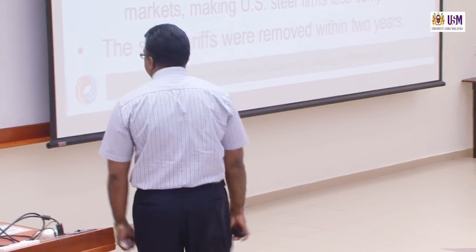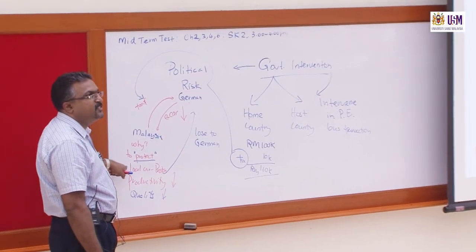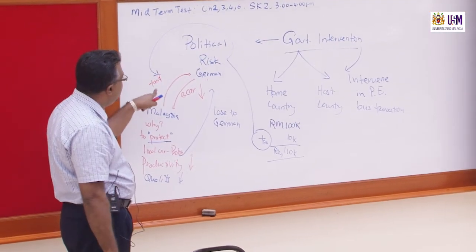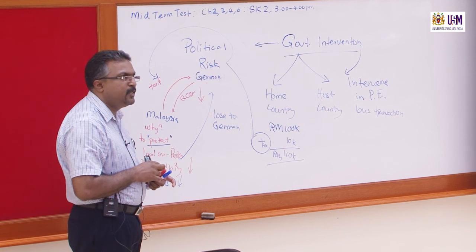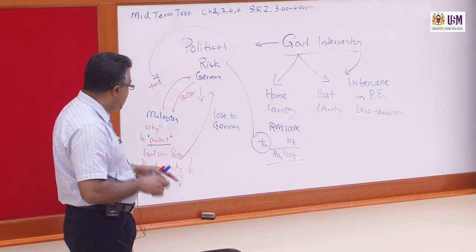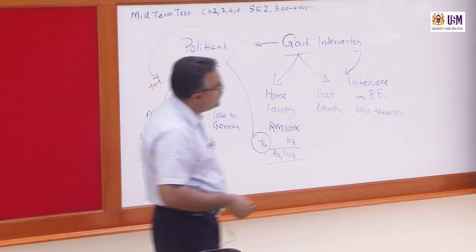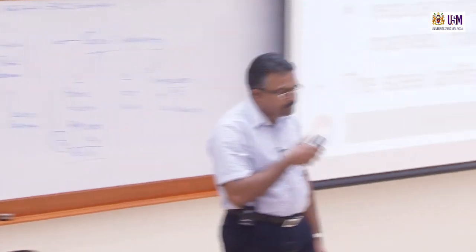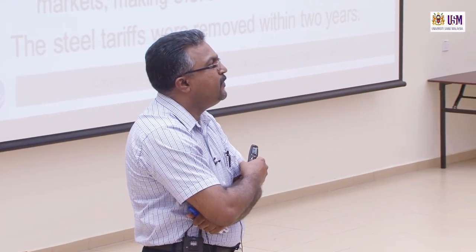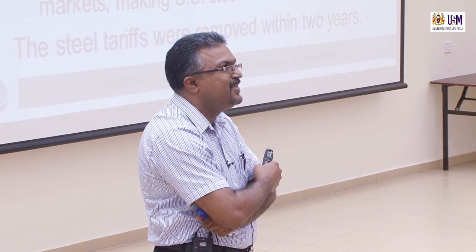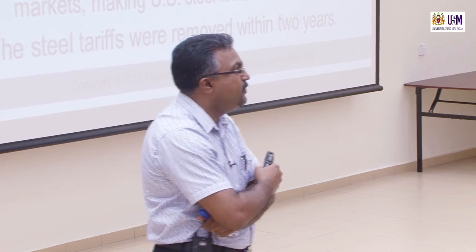US wanted to protect the local steel makers, but the price went up, costs went up, local producers couldn't cope with the cost, business slowed down, quality of the local steel maker dropped, and in the end the government itself removed the tariff within two years. So does tariff really protect the domestic industry? Not really — maybe short term, but long term that may not be the case.